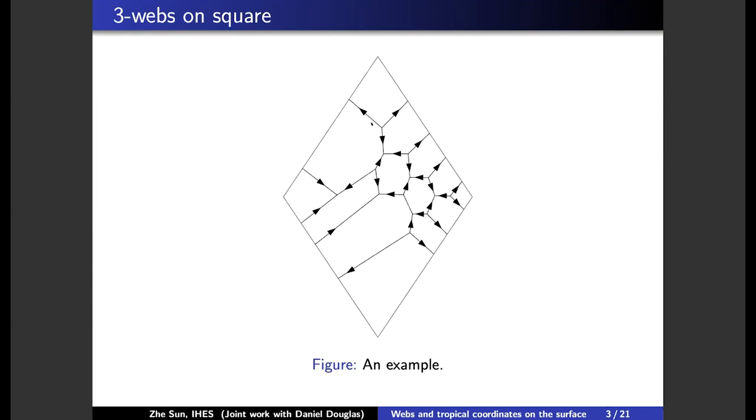So here is a picture of 3-webs on the R-squared. So you can see there's only 3-valence vertices in the interior. And all the points, interior vertices, point outward or inward.